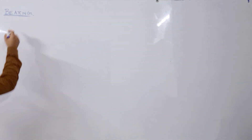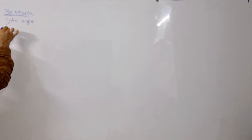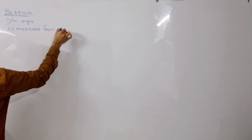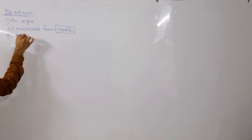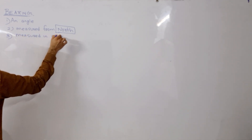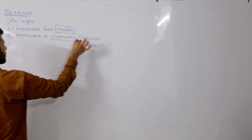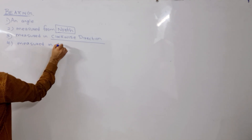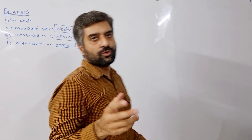So what is bearing? Bearing is basically an angle but with a few conditions. Number one, it is an angle. Number two, it is measured from north. Keep this in mind. Number three, it is measured in a clockwise direction. Keep this in mind as well. And number four, it is measured in three digits. These are the key things you need to keep in mind before solving this question.